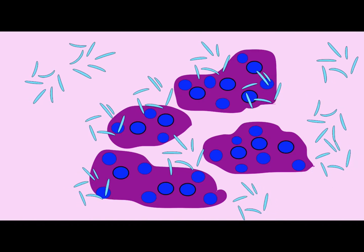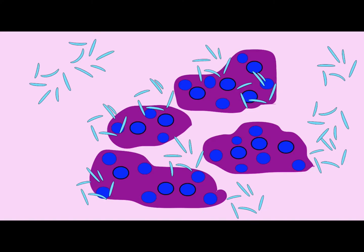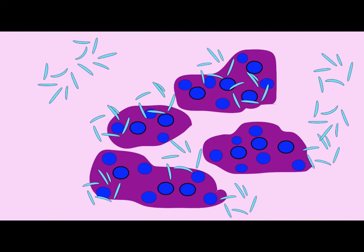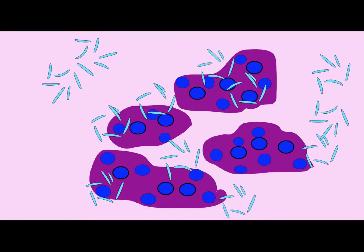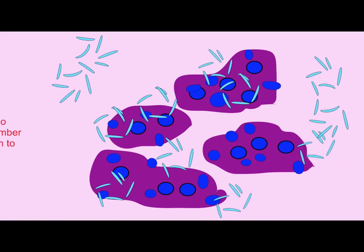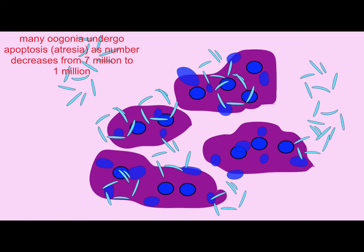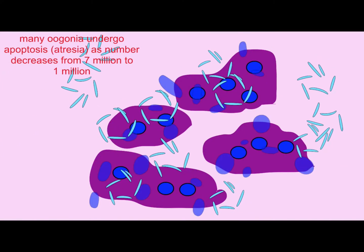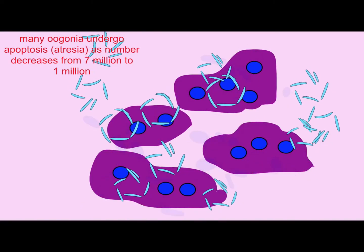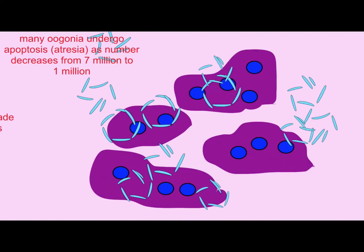This seems to be a way in which oogonia which potentially possess mutations are controlled for, so that only the healthiest potential gametes will proceed in reproductive development.